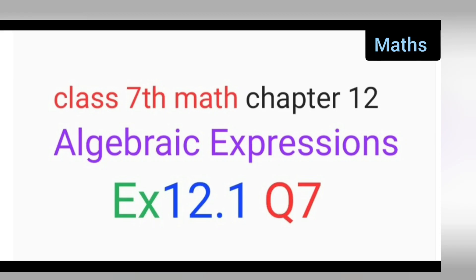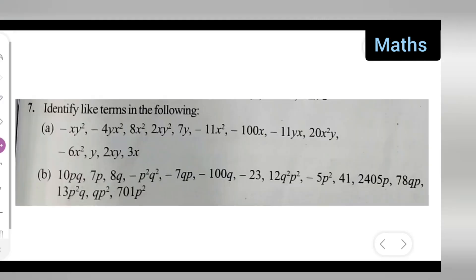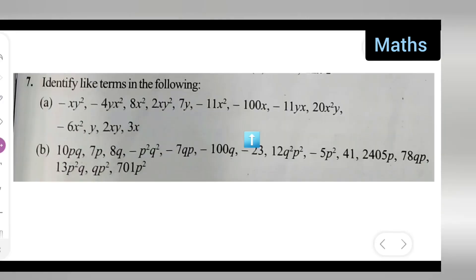Welcome to today's class of mathematics. This is for class 7 mathematics, chapter 12, algebraic expressions. It is exercise 12.1, question number 7. I will be solving exercise 12.1 question number 7 today. Let me start — first you can take down the question. What you'll have to do is identify like terms in the following.